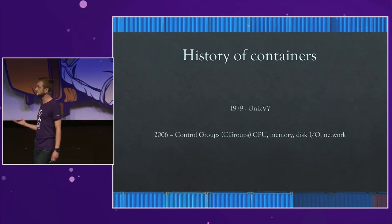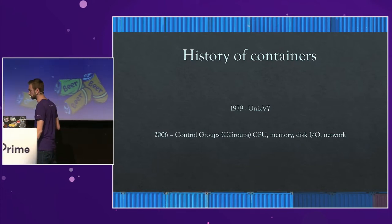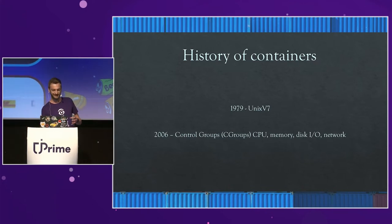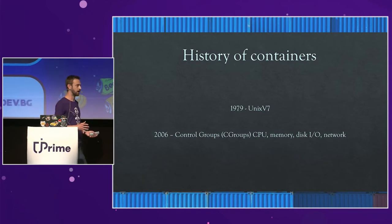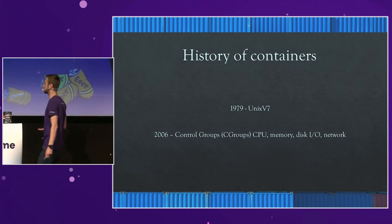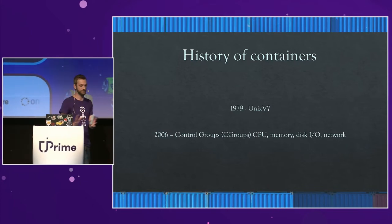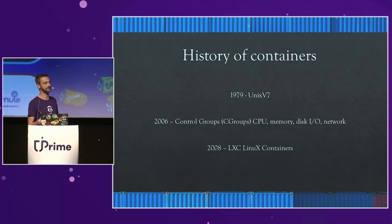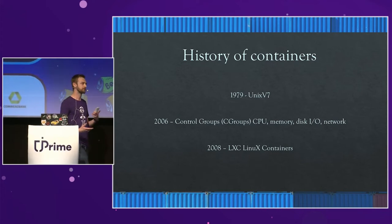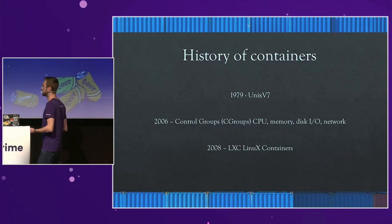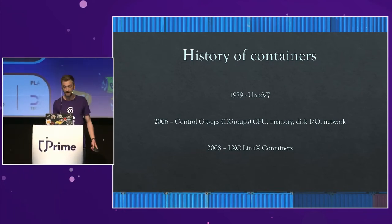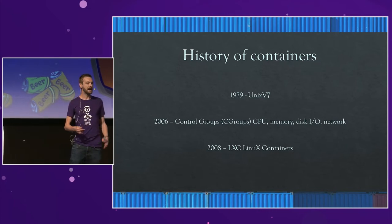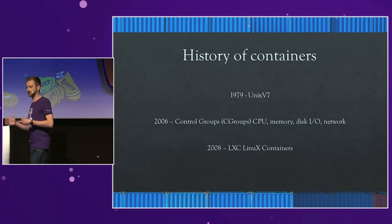After that, we had something called cgroups, mainly created by Google, and what this allowed was basically to isolate resources on your Linux machine — CPU, network, memory, input and output, etc. — into specific parts of the underlying kernel. Then after this, we had in 2008 something called LXC, or Linux Containers. This was really the first most complete containerization technology that was out there, and it utilized those cgroups donated by Google to isolate resources on the underlying kernel.